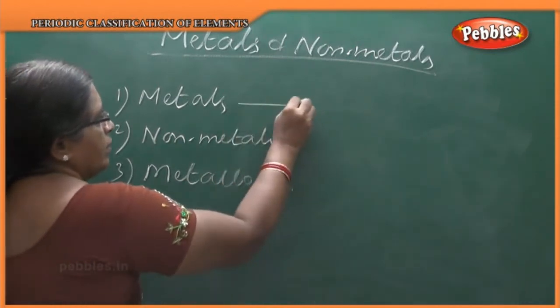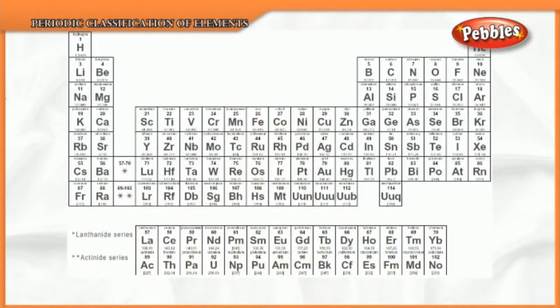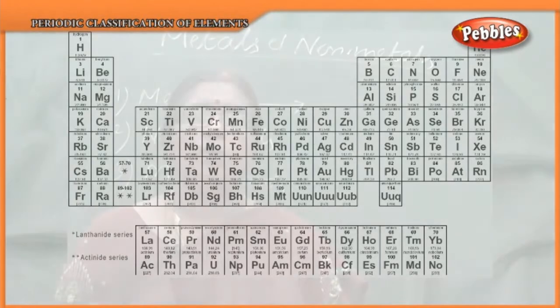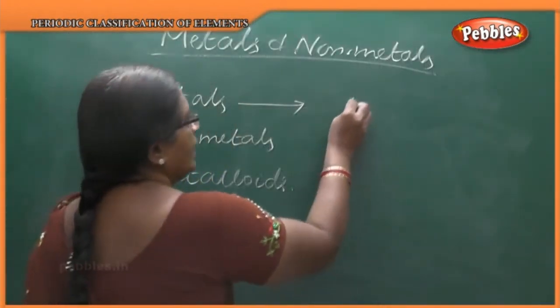Metals means all the elements which have similar properties come under one group called metals. When you take the periodic table, you find that metals are placed on the left side. Most of the elements found are metals.